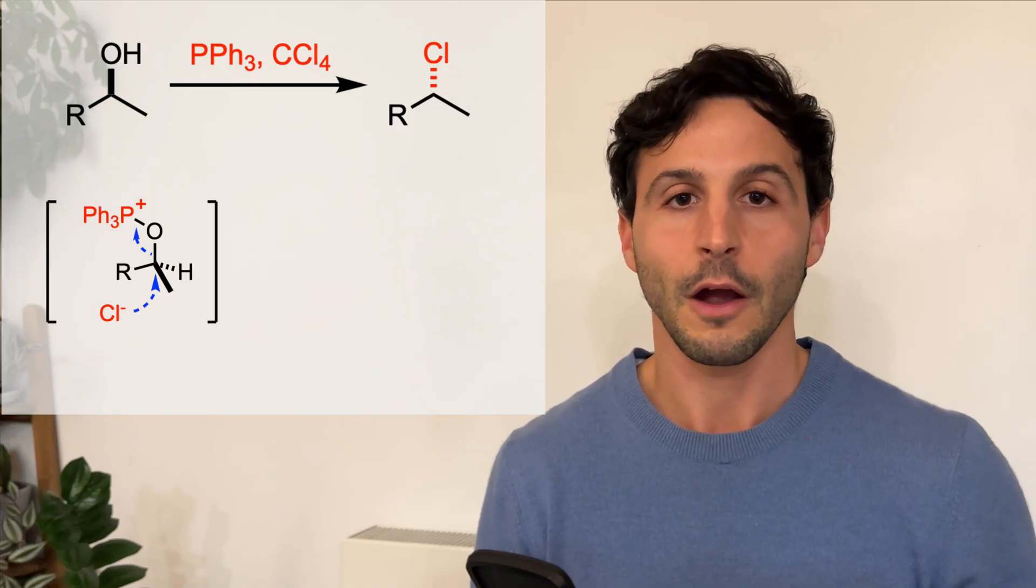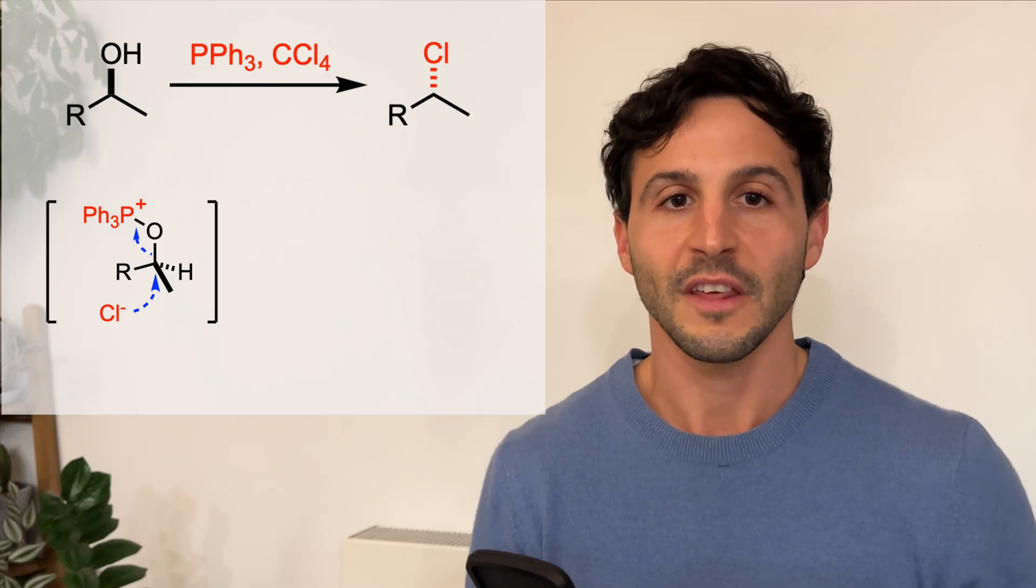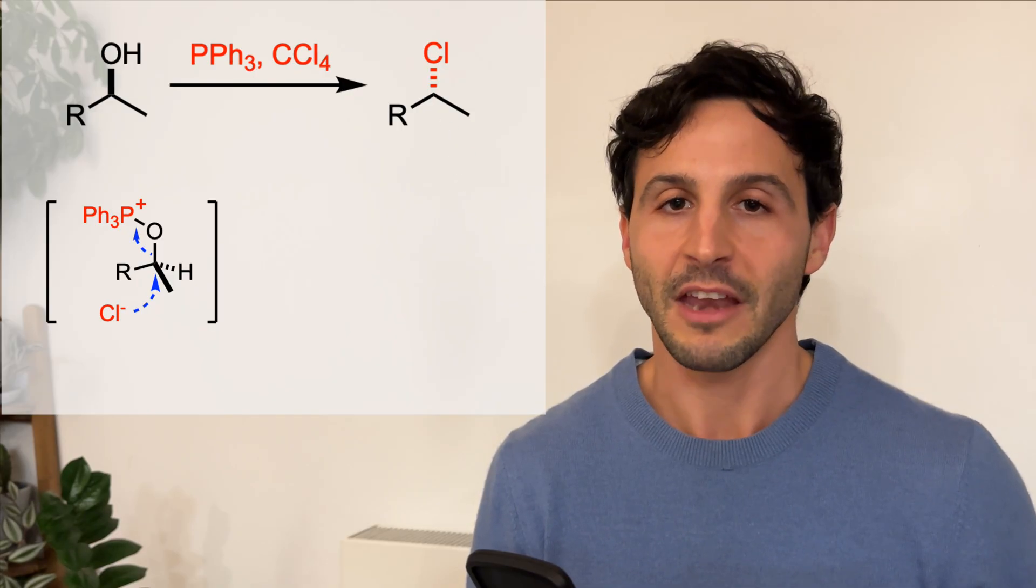With primary and secondary alcohols, the halide reacts in an SN2 fashion, proceeding with inversion of configuration if the carbon is asymmetric.